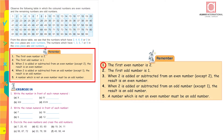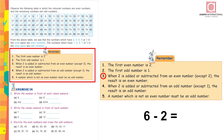The first even number is 2 — remember this. The first odd number is 1. When 2 is added or subtracted from an even number (except 2), the result is an even number. When 2 is added or subtracted from an odd number (except 1), the result is an odd number. A number which is not an even number must be an odd number. For example, if we subtract 2 from 6, the result is 4, which is an even number.